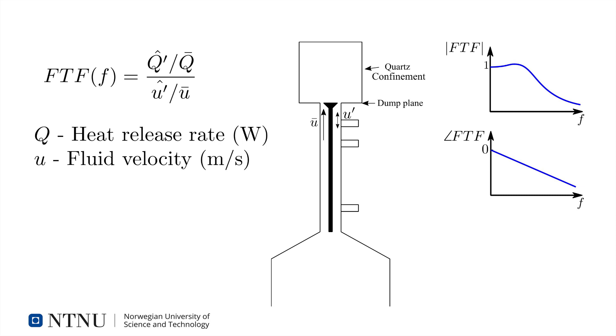The phase of the FTF typically decreases linearly. This is because the phase is governed by a time delay from when disturbances caused by velocity fluctuations at the reference position come back to the average location of the heat release fluctuations. This time delay is almost unaffected by the frequency of the fluctuations.